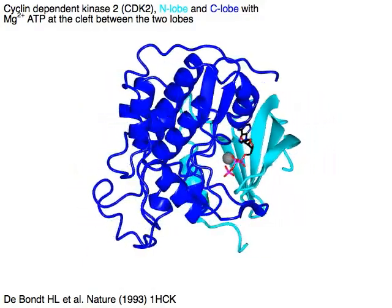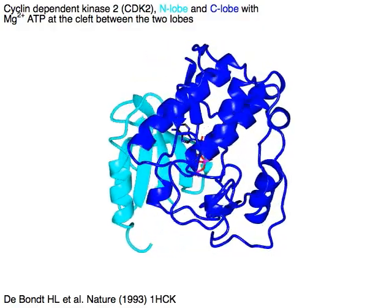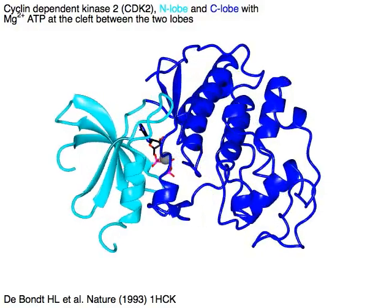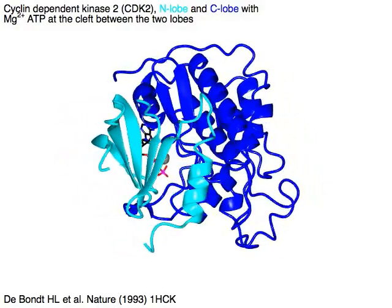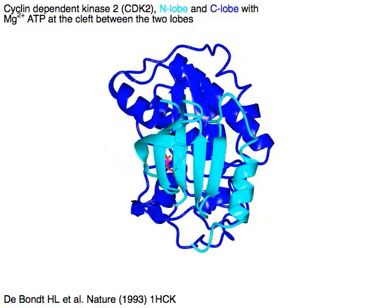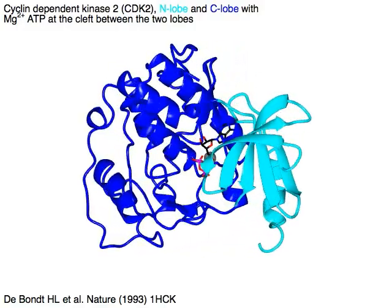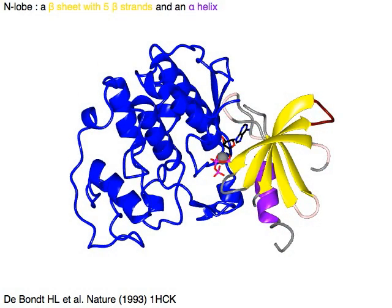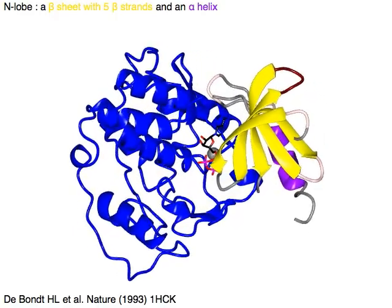Cyclin-dependent kinase 2, or CDK2, has an N-lobe in cyan and a C-lobe in blue, with magnesium ATP at the cleft between the two lobes. The N-lobe has a beta sheet in yellow with 5 beta strands and an alpha helix in purple.